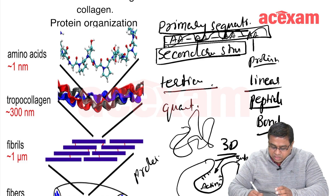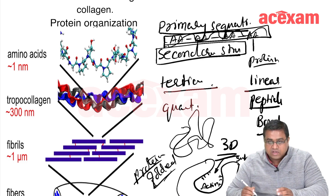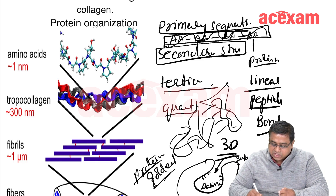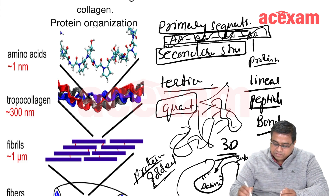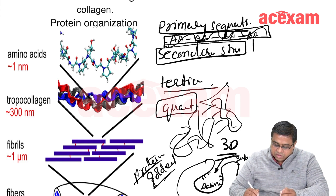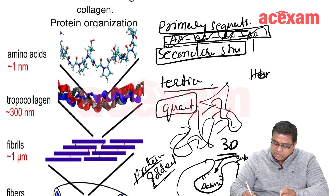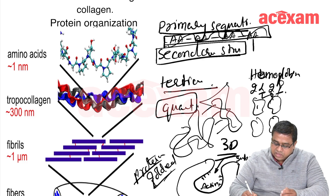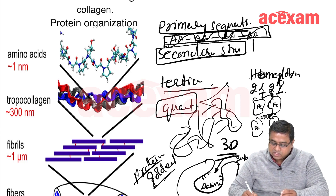Protein folding is critical, and there are diseases associated with misfolding. Quaternary structure arises when two or more polypeptide chains bind together, as in hemoglobin, which is made up of 2 alpha and 2 beta chains, each containing a ferrous molecule. Collagen itself does not have a true quaternary structure involving different proteins — it binds its own chains in fibril form, which could be considered a homo-quaternary arrangement.